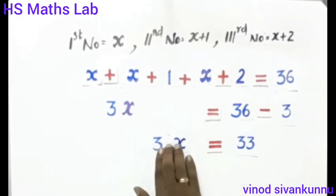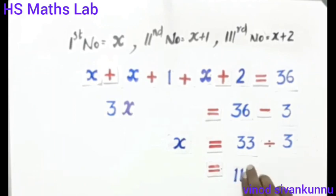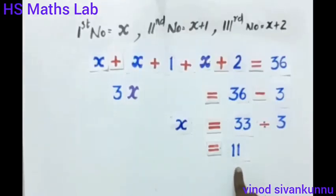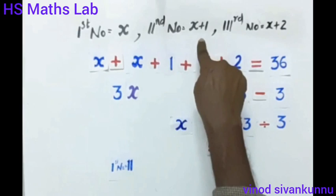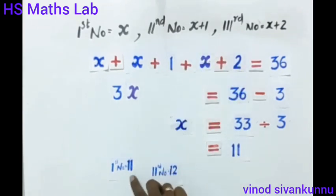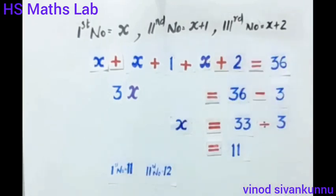So 3x equals 33. Dividing both sides by 3, x equals 11. The third number is x plus 2, and x plus 1 is 12, and x plus 2 is 13. So the three consecutive natural numbers are 11, 12, and 13.